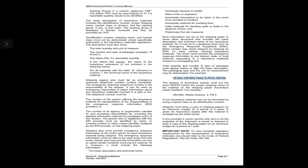Total quantity and number and type of packages must appear before or after the basic description; the packaging type and unit of measurement may be abbreviated. The shipper of hazardous waste must put the word 'waste' before the proper shipping name on the shipping paper (hazardous waste manifest). A non-hazardous material may not be described by using a hazard class or an identification number. Shippers must keep a copy of shipping papers or an electronic image for two years (three years for hazardous waste) after acceptance by the initial carrier. A carrier must keep a copy for one year.